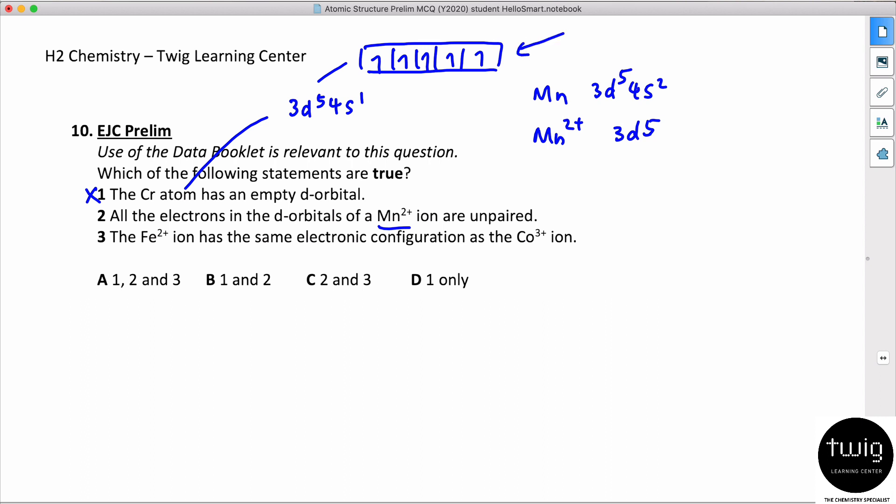The Fe2+ ion has the same electronic configuration as Co3+. So let's look at iron - iron actually has 26 protons. How many electrons? There should be - you take away two electrons, so it should be 24 electrons, because it's 2+.